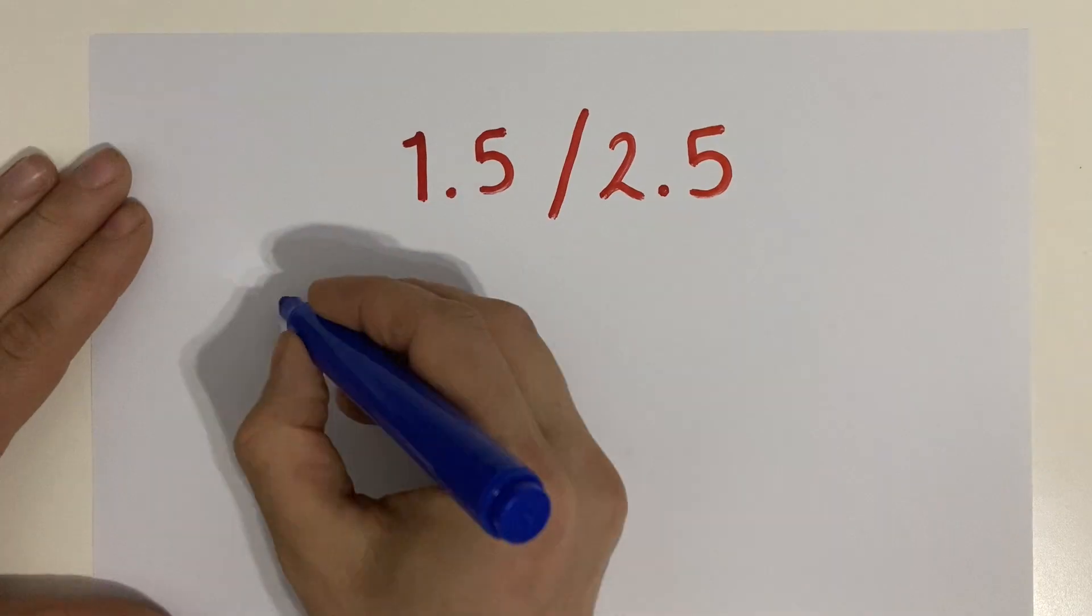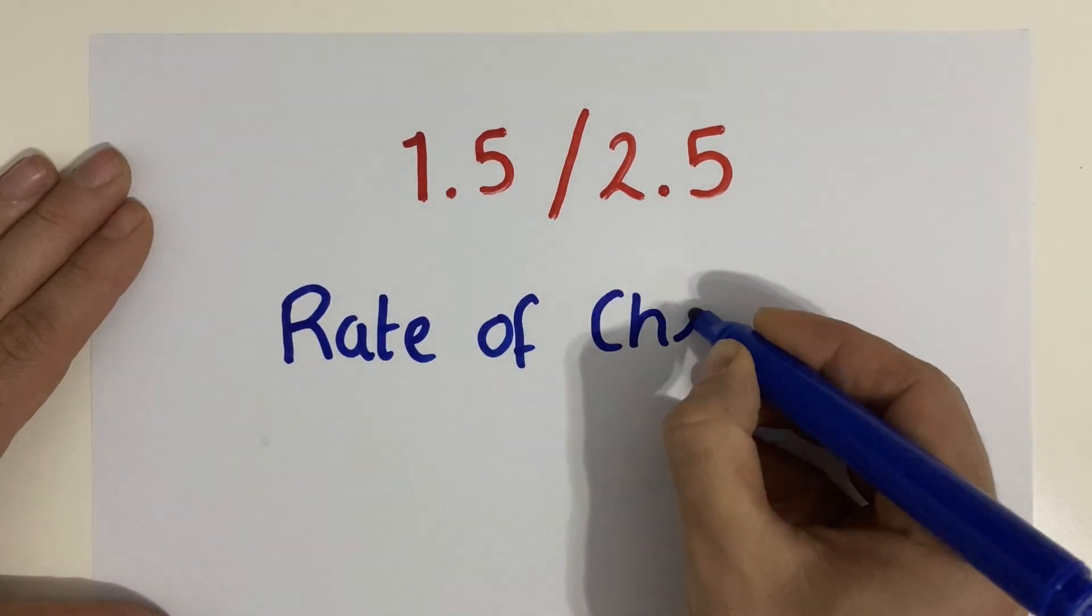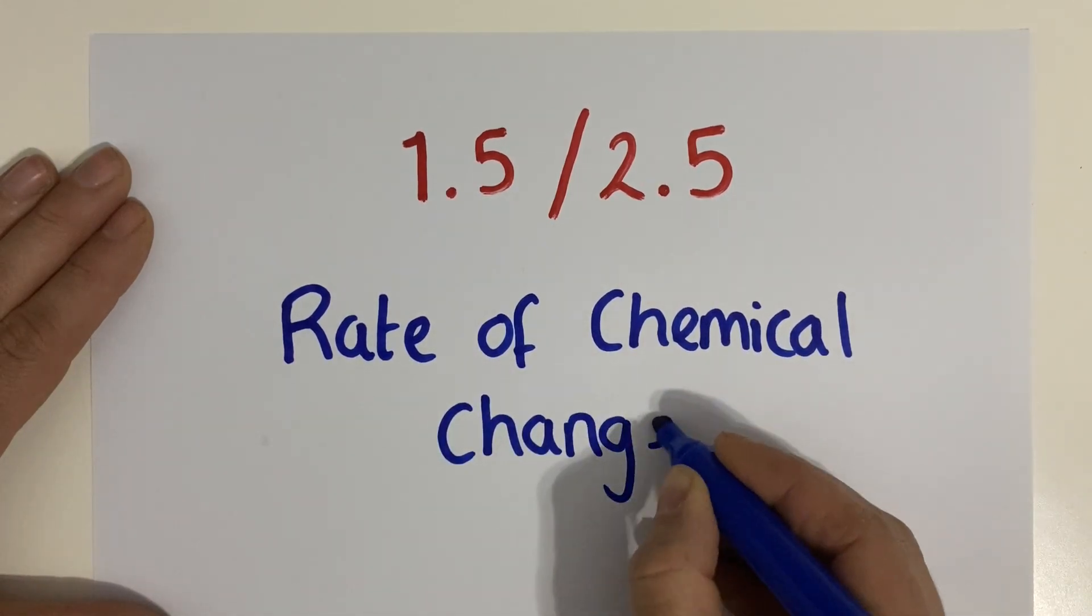Okay, for the next few videos, I'm going to move on to the rate of chemical change topic, which is 1.5 if you're doing separate science, or 2.5 if you're doing double award.